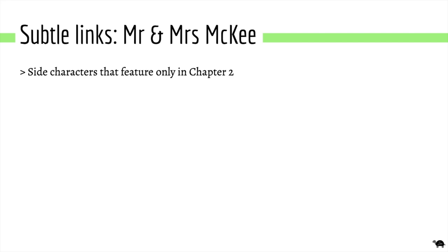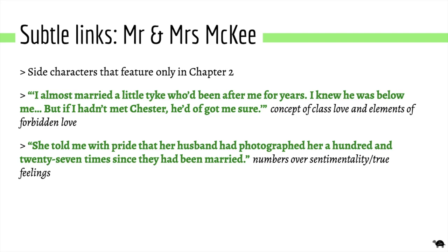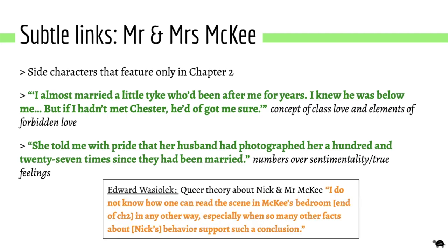The side characters Mr and Mrs McKee in chapter two are used by Fitzgerald to further emphasise how class acts as a barrier to love — introduced before Daisy and Gatsby to show class affects many relationships. Mrs McKee says: 'I almost married a little tyke who'd been after me for years. I know he was below me, but if I hadn't met Chester he'd have got me.' She only married Chester because he was of the same or higher class, much like Daisy and Tom — another case where love failed because she picked wealth. She also mentions McKee photographed her 127 times during their marriage, emphasising numbers over sentimentality. Some queer theorists believe Mr McKee and Nick had an affair at the party, further emphasising the McKees' marriage is not founded on love.